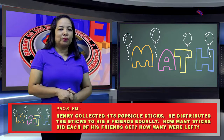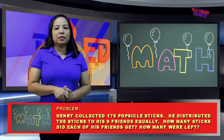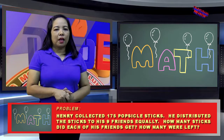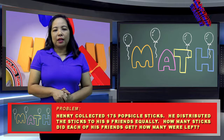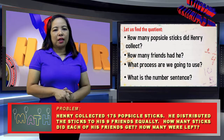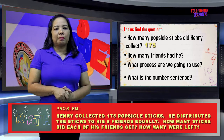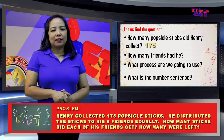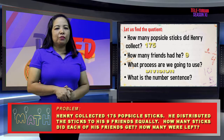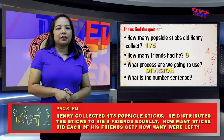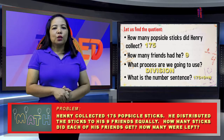Sample number 2. Henry collected 175 popsicle sticks. He distributed the sticks to his 9 friends equally. How many sticks did each of his friends get? How many were left? Let us find the quotient. How many popsicle sticks did Henry collect? 175. How many friends did he have? 9. What process are we going to use? Division. What is the number sentence? 175 divided by 9 equals N.